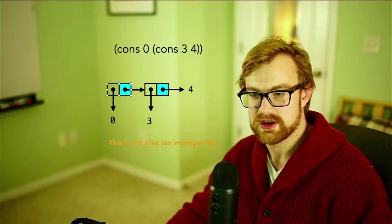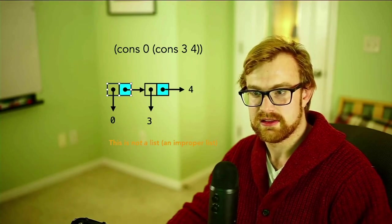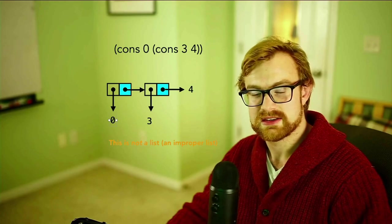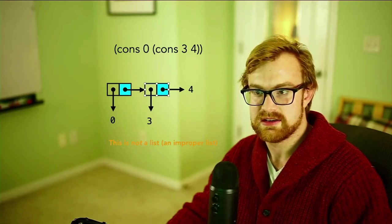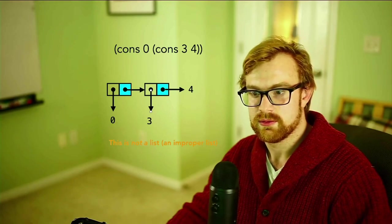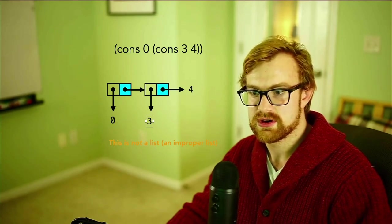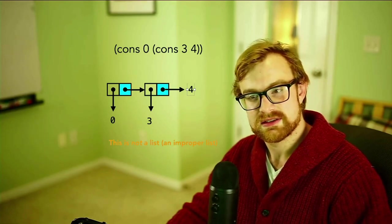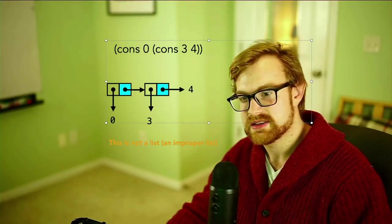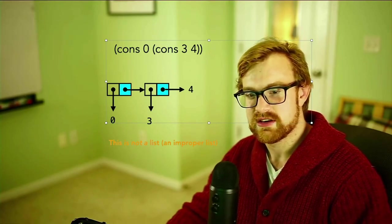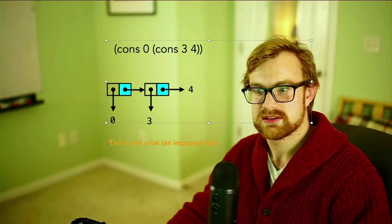The left side, the car side of the cons cell is zero. The right side, the cdr of the cons cell, is another cons cell. So what is its car? Well, that's three. And then what is its cdr? Well, it's four. Now this is not a list. It's not a list because it doesn't end in the empty list. So instead, we would conventionally call this an improper list in Racket.